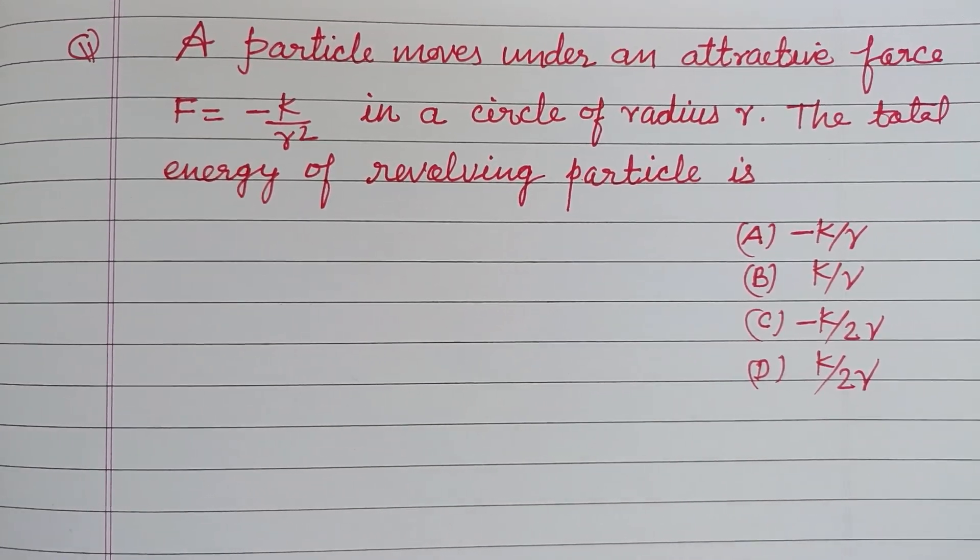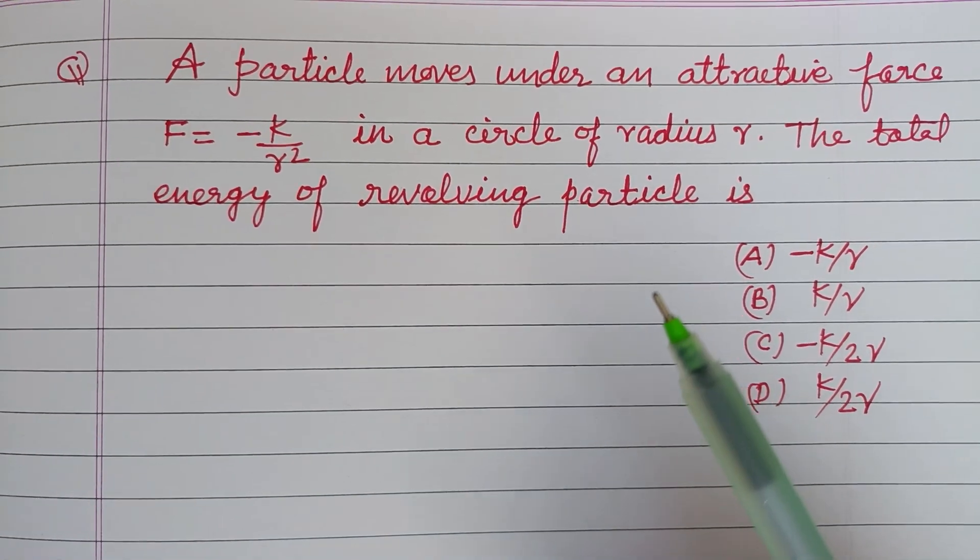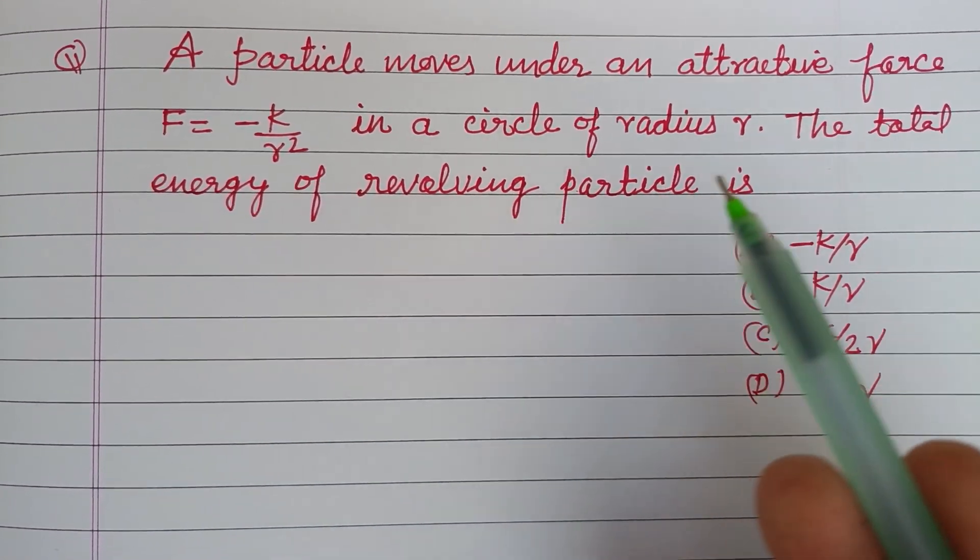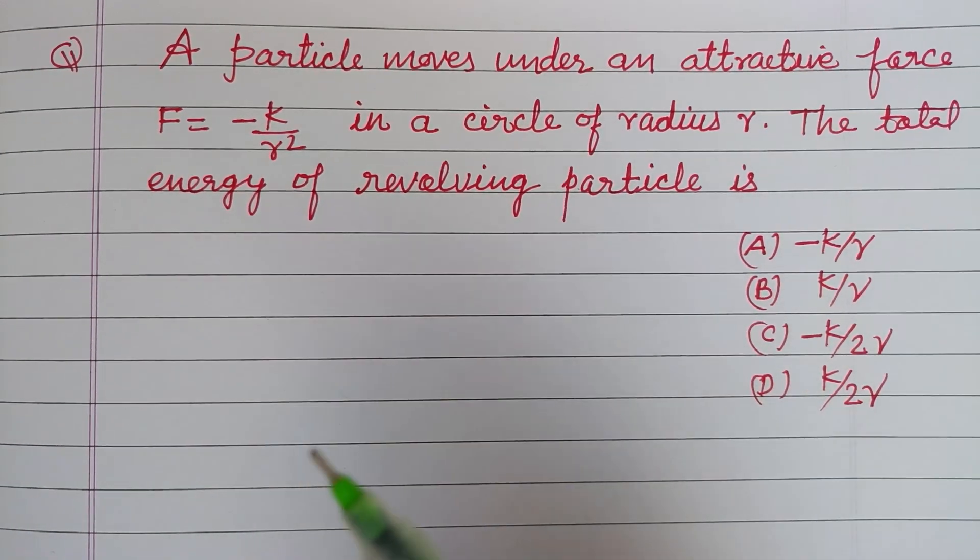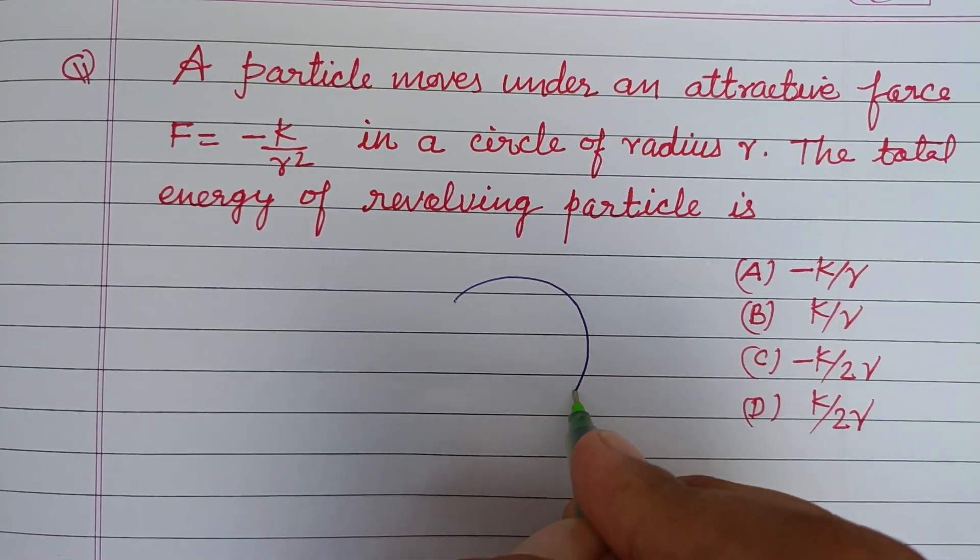Hello viewers, warm welcome to this YouTube channel. Question is: A particle moves under an attractive force F equals minus K over R square in a circle of radius R. The total energy of the revolving particle is?